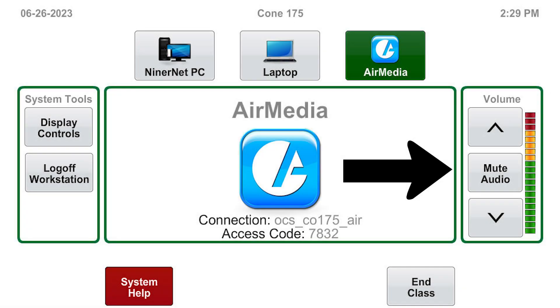On the right side of your control panel screen you'll find the volume controls. There's a meter on the side that will move up and down to indicate the volume of the computer. You can also mute the computer by pressing the mute audio button.